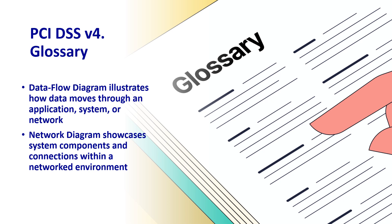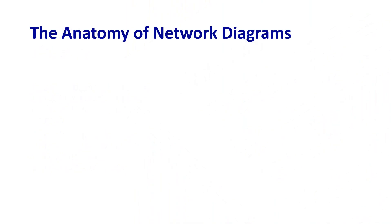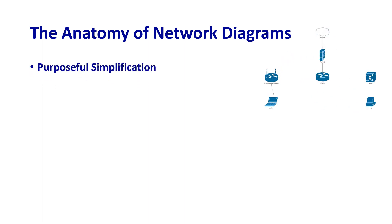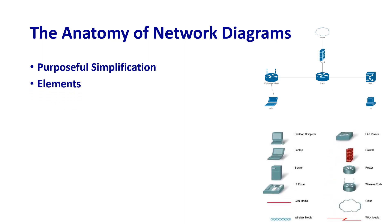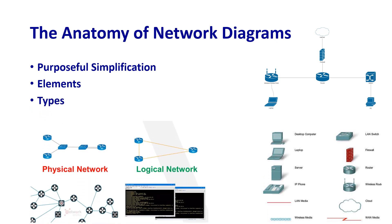The anatomy of network diagrams: network diagrams are not mere illustrations — they are graphical depictions of the architecture, components, and connections within a network. Their significance lies in simplifying intricate technical details into an accessible format. Key aspects include purposeful simplification, aiding both technical and non-technical stakeholders. Elements include nodes representing devices, links indicating connections, subnets grouping devices logically, and icons and labels conveying additional information. Types include logical network diagrams, which focus on conceptual aspects, and physical network diagrams, which provide tangible representations.